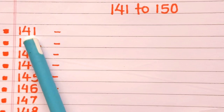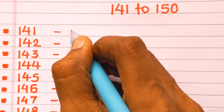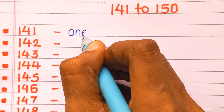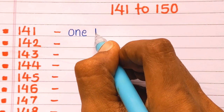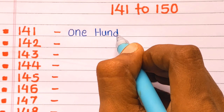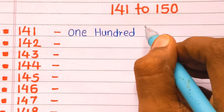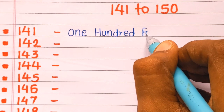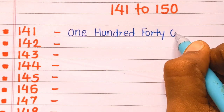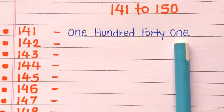At first, 141 is one hundred forty one. O-N-E, one. H-U-N-D-R-E-D, hundred. F-O-R-T-Y, forty. O-N-E, one. 141.